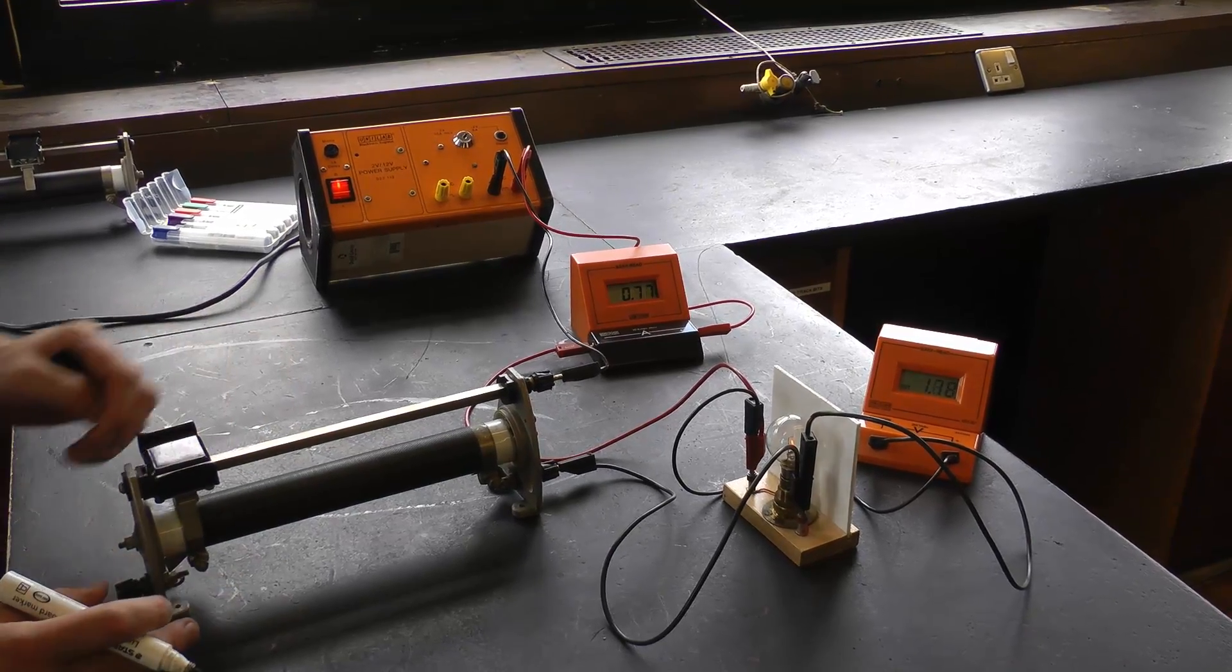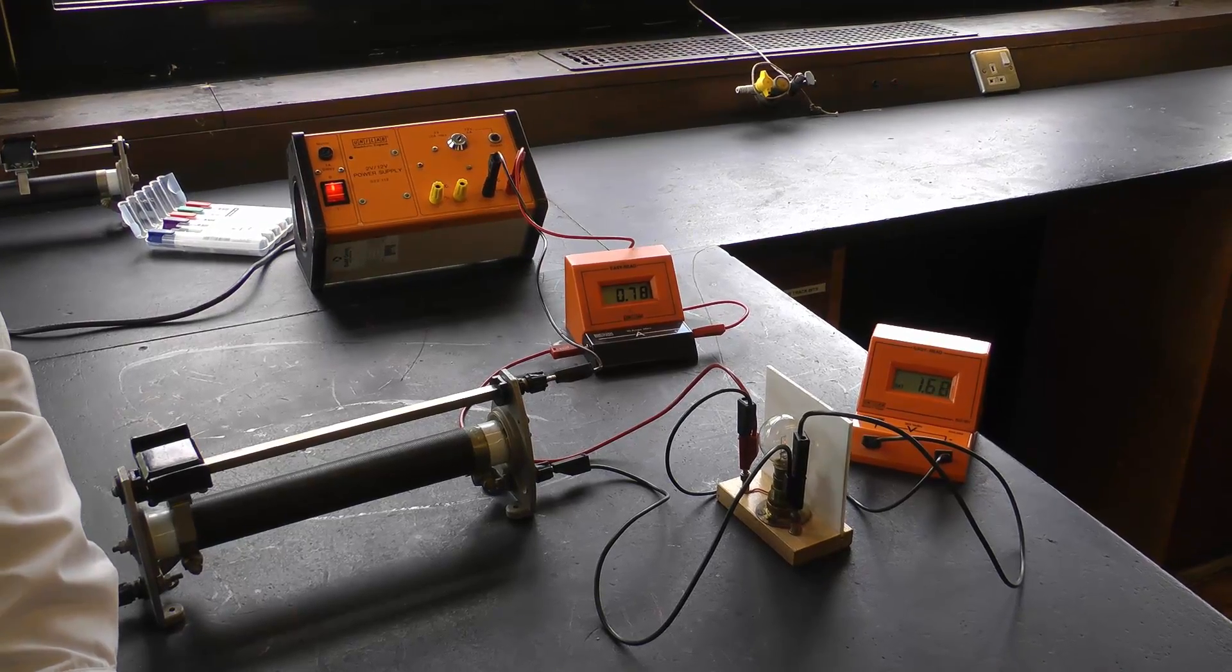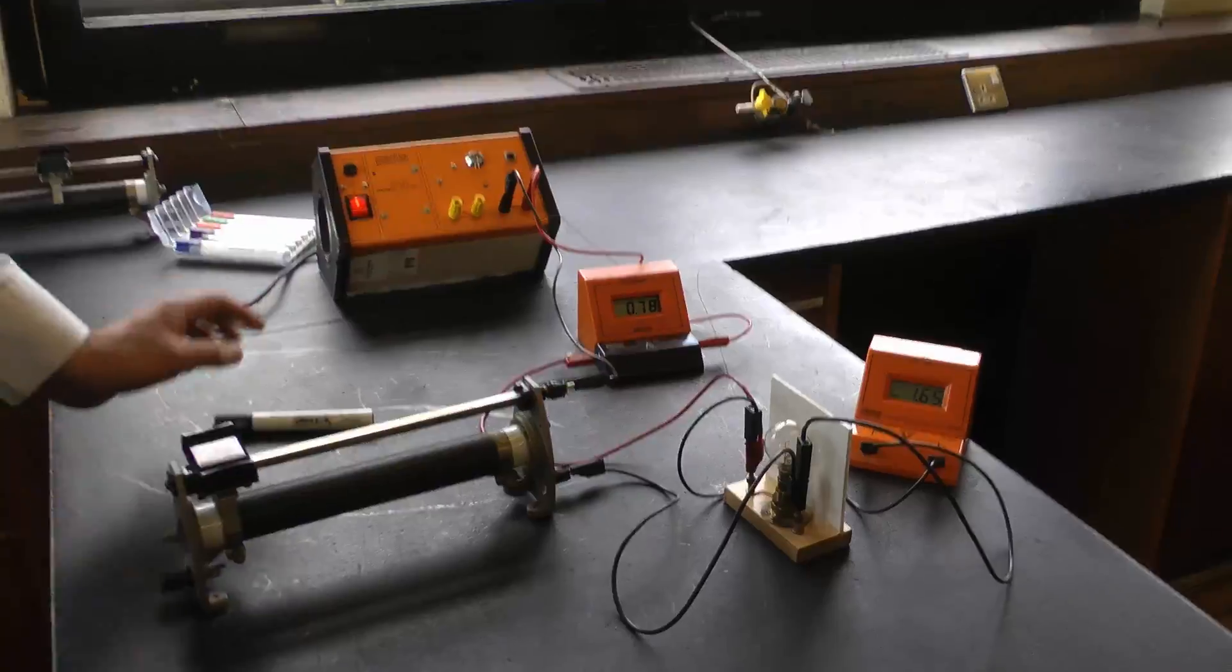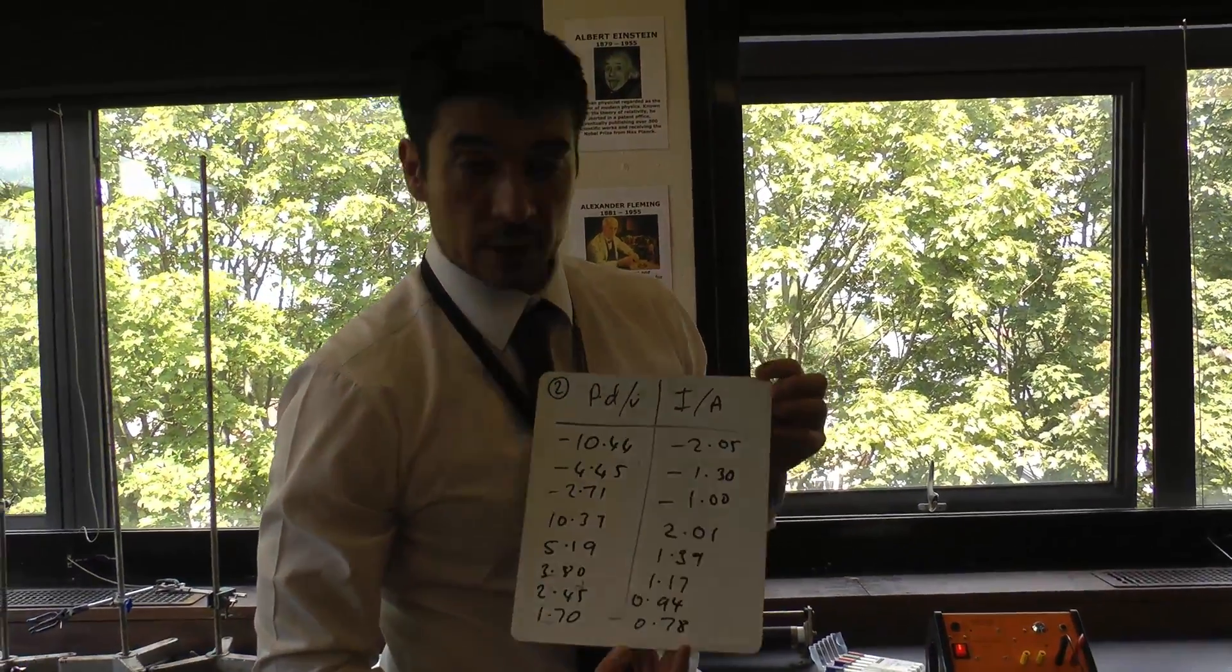I've got an extra reading or maybe two: 2.45 volts and 0.94 amps. And one last reading at our lowest voltage, 1.70 volts, we've got 0.78 amps. These are the readings I'm going to use to plot a graph of current against voltage for the bulb.